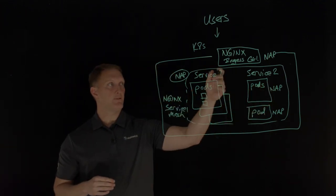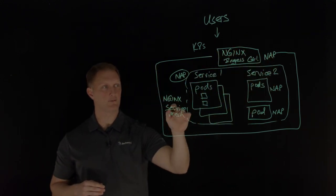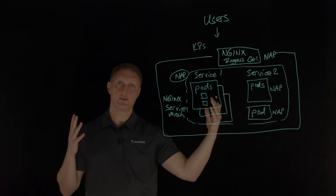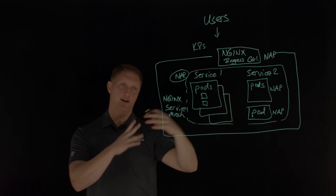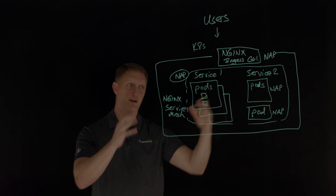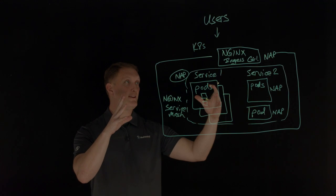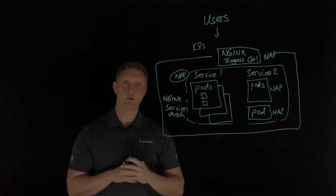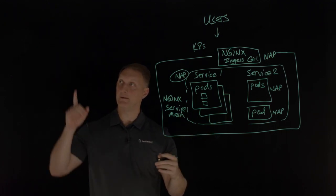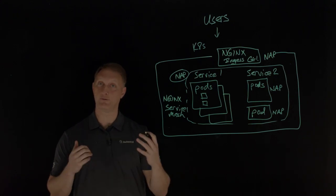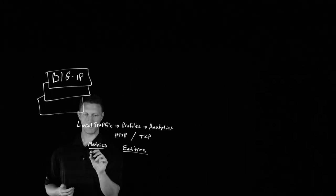So NGINX provides the ingress controller, the web application firewall via NGINX App Protect, and the service mesh to give you a true production ready Kubernetes solution — all with one tool, avoiding tool sprawl. With all of this you get the automation you're looking for, get your applications to market faster and safer, security to protect your customers and business from existing and emerging threats, and the performance to deliver the digital experiences your users expect. If you liked this video and this whole journey, make sure you click on our Dev Central logo and subscribe to our YouTube channel. We'll see you out there in the community.